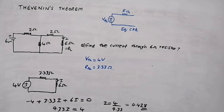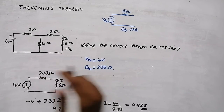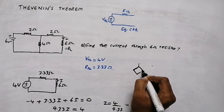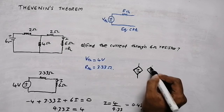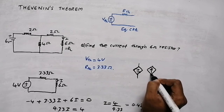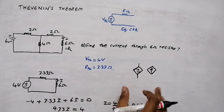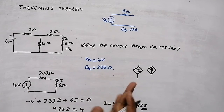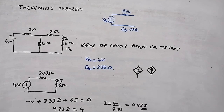In the next video, I will tell you how to do Thevenin's theorem when you have a dependent source in the question — either a dependent voltage source or a dependent current source. There is some small difference in the procedure, and I will explain how to handle that.